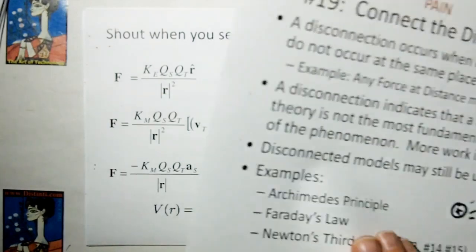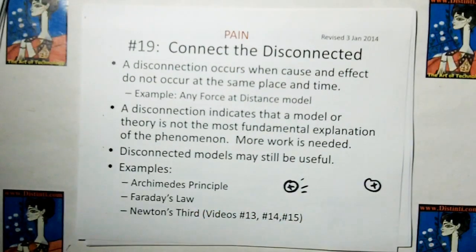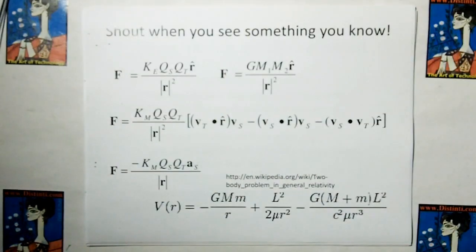And what rule of acquisition number 19 means, if you have models that are disconnected in space and or time, that you do not have the most fundamental expression of the physical system. All you have, basically, is an empirical model. And these are empirical models.